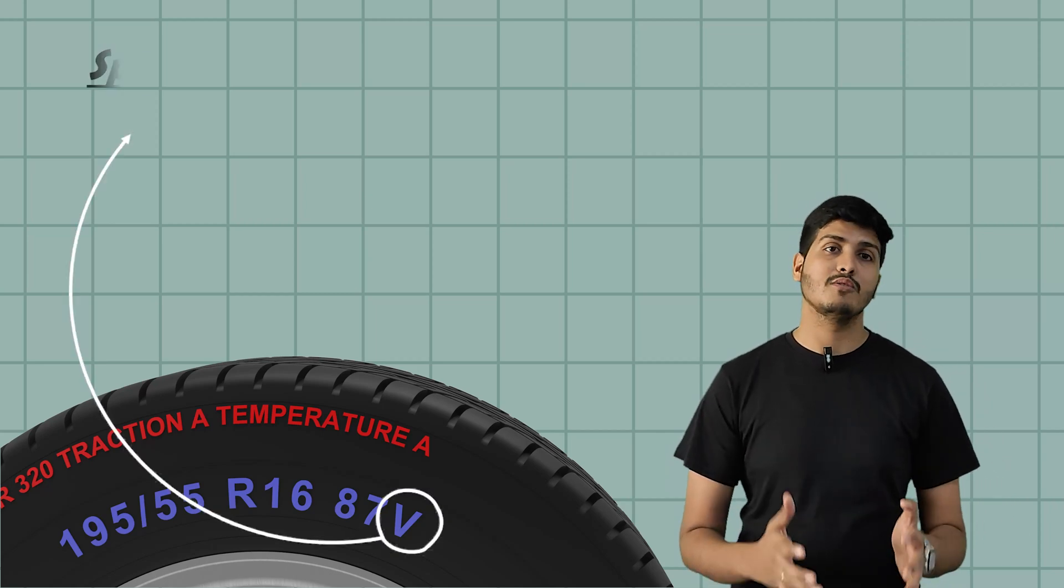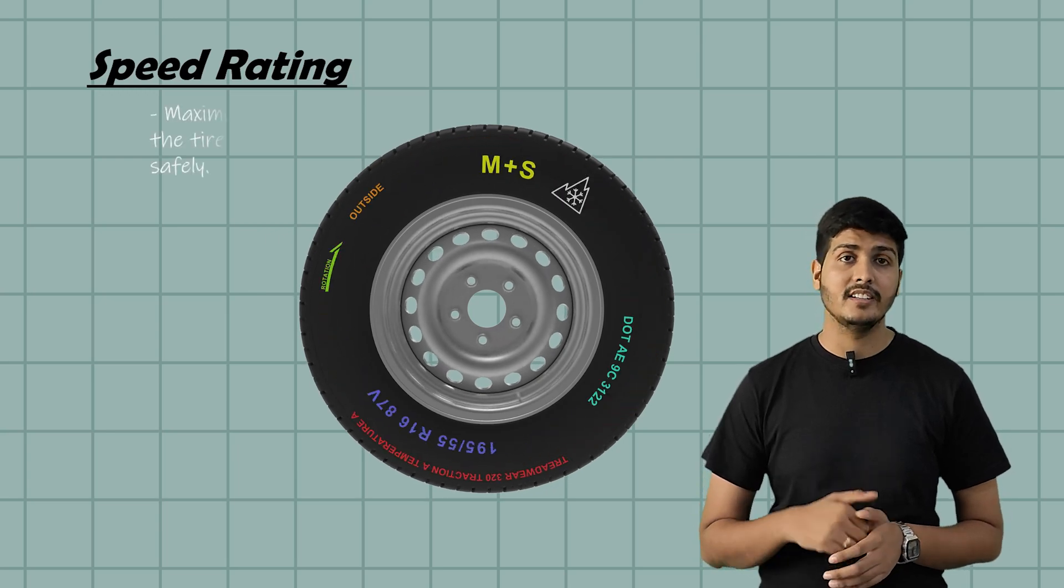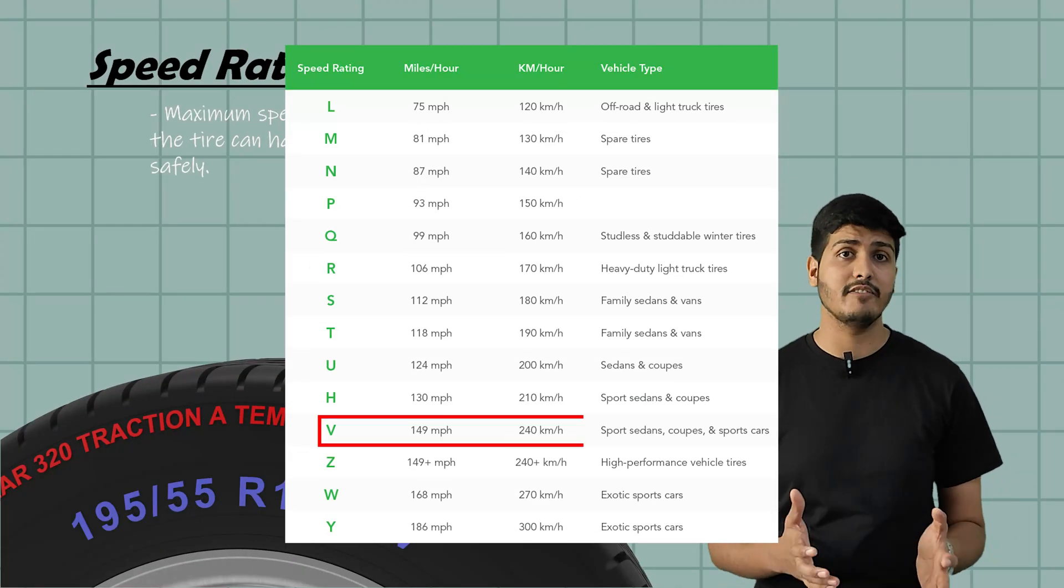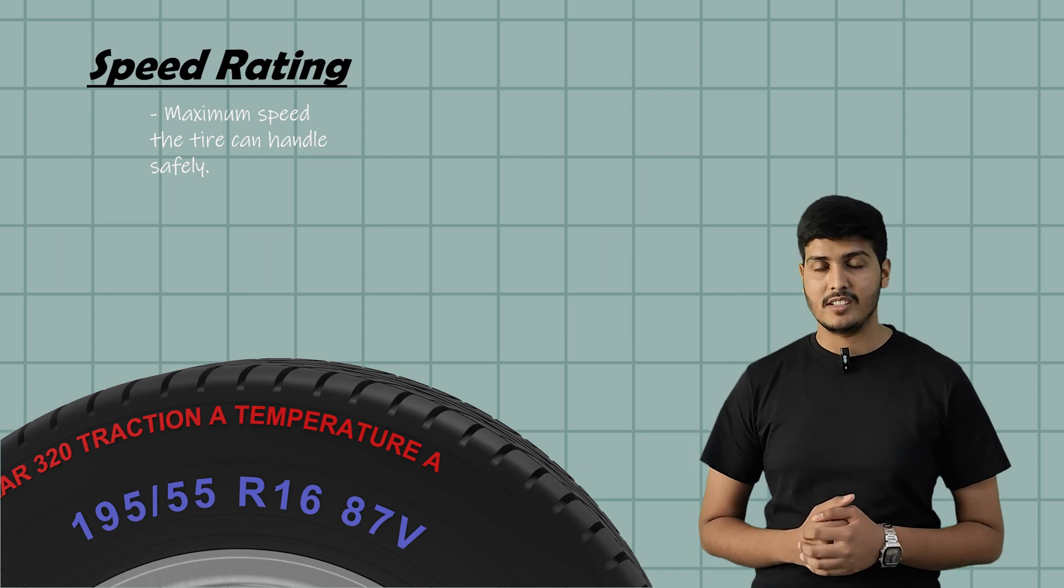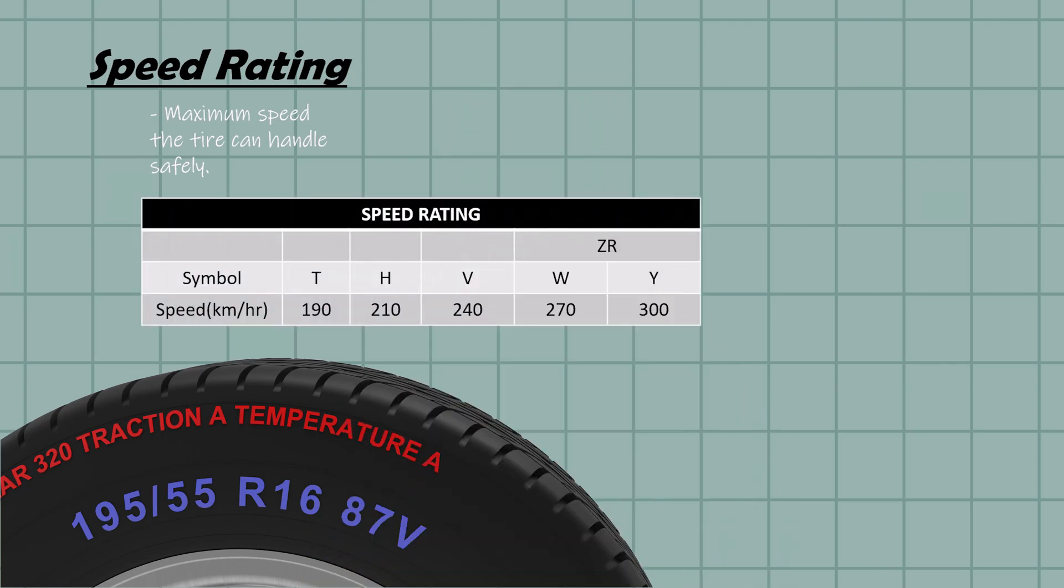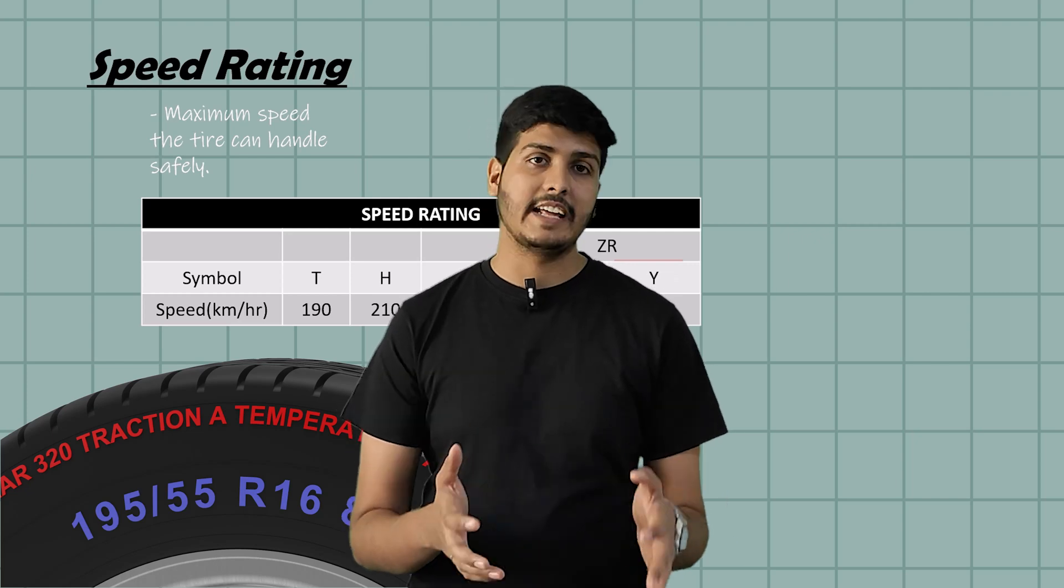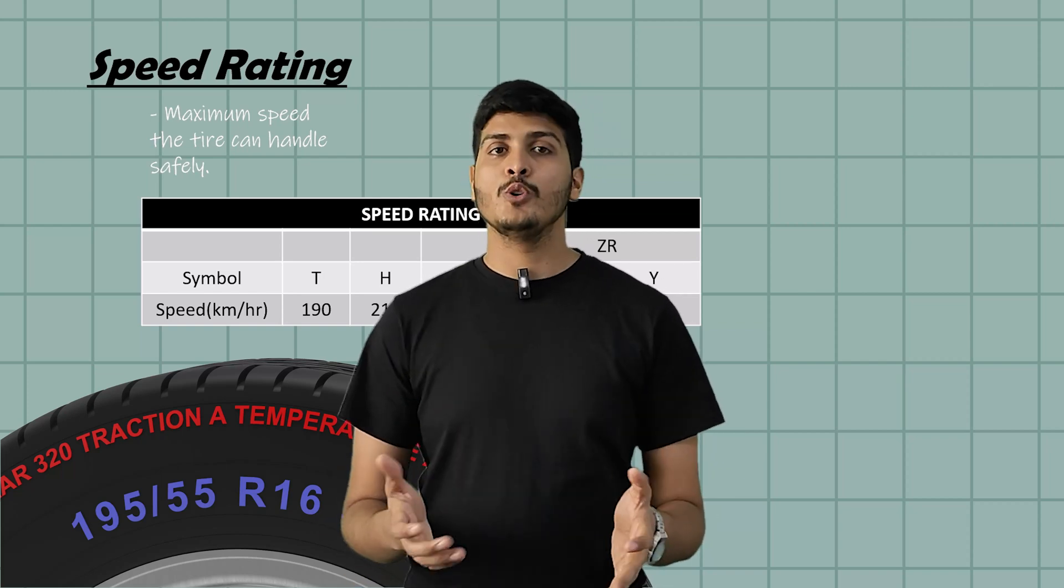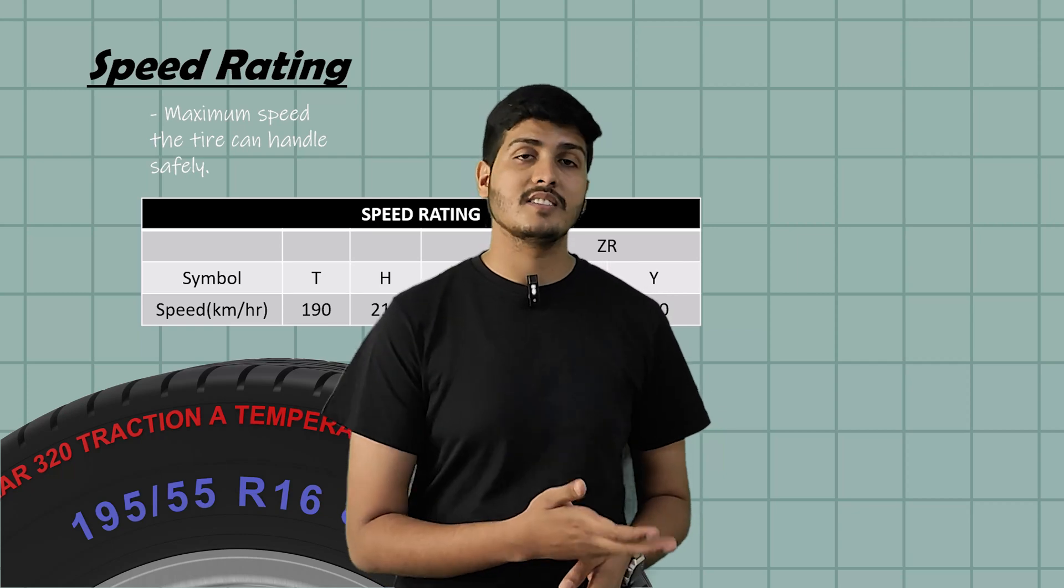Now the last character in the sequence is V which stands for speed rating of the tire. This tells the maximum speed the tire can handle safely under ideal conditions when properly inflated and loaded. So what does V mean? According to standard chart V rated tires are safe up to 240 km per hour. That doesn't mean that you have to go that fast. It only means the tires are designed to handle the heat and stress at that speed. Different letters mean different speed capabilities. Here are a few common ones. So T is for 190 km per hour, H 210, V 240 and we have a category where the speed is above 240 km per hour especially for high performance cars. We have W for 270 km per hour and Y for 300 km per hour. So remember that single letter in the end isn't just a random alphabet. It tells you how fast your tire is designed to perform safely. Stick to what your car manual recommends or you can go higher if needed but never go lower.